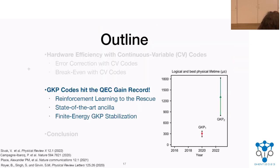There was a first experiment in 2020 by the same group that just fell shy of break-even, and there were three crucial modifications we made to achieve the new QEC gain record. First, we used reinforcement learning to optimize experimental parameters. Second, we used a better ancilla — the first ancilla had 100 microsecond lifetime and this one has 300 microseconds. Third, we used a more accurate stabilization routine for the oscillator code.